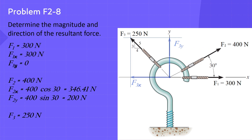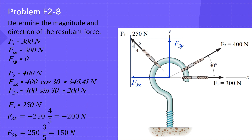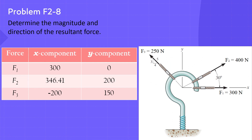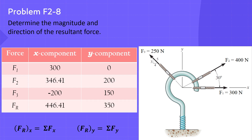For F3, it has two components: F3x in the negative x direction and F3y in the positive y direction. F3x equals negative 250 multiplied by 4 divided by 5 equals negative 200 newtons. The negative sign is because it is in the negative x direction. F3y equals 250 multiplied by 3 divided by 5 equals 150 newtons. This table collects the x and y components for each force. Using the equations, FRx equals 300 plus 346.41 minus 200 equals 446.41 newtons, and FRy equals 0 plus 200 plus 150 equals 350 newtons.